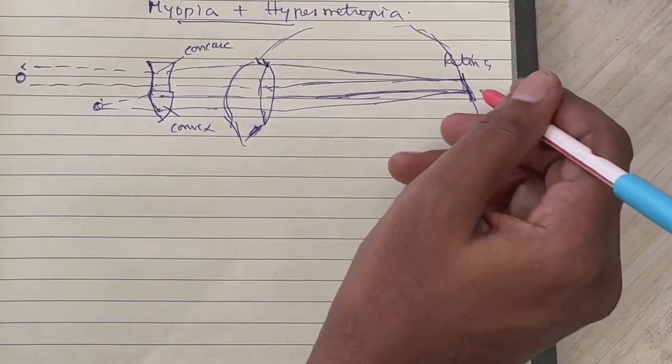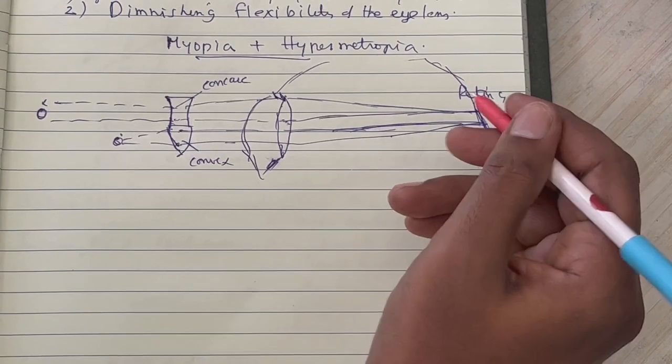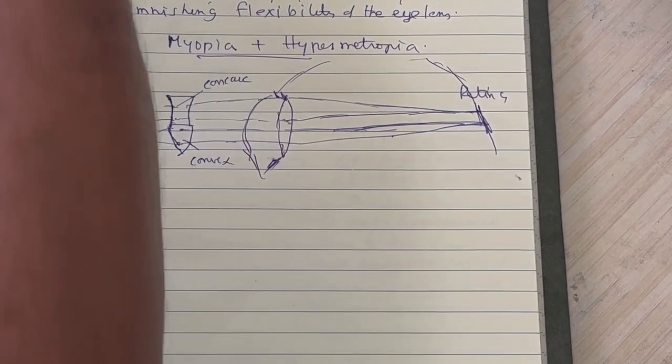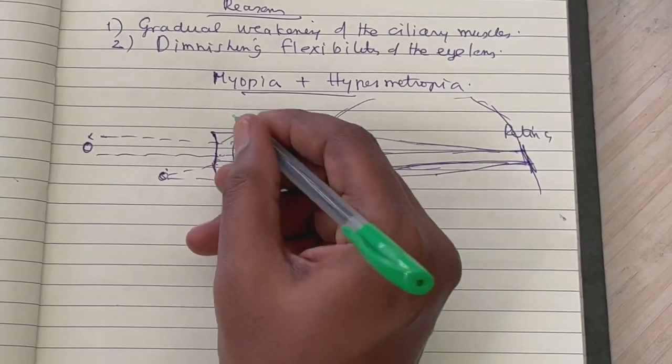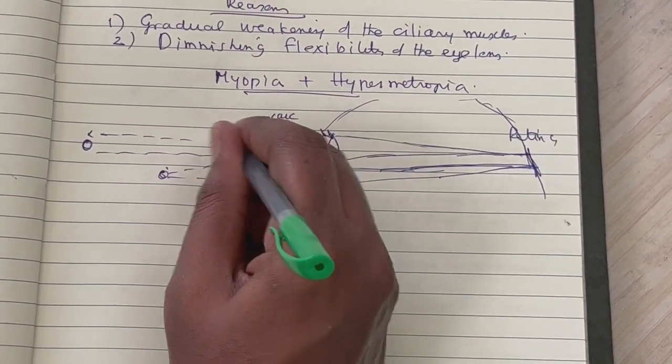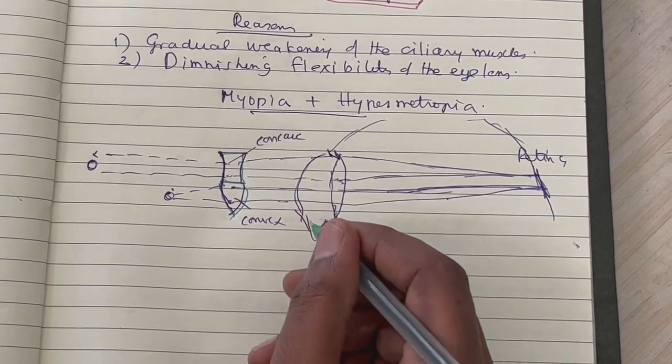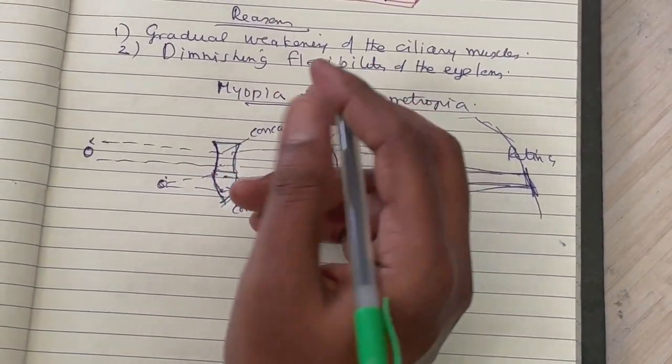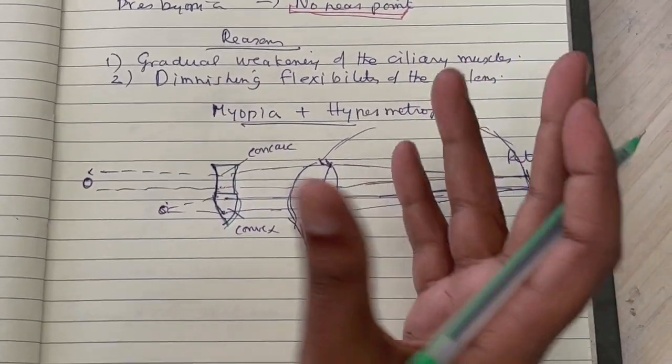And for a nearby object, something like this, you can see that here also focus is formed - an image is formed on the retina. So learn the point that interestingly in a case like this, by combining both a concave as well as a convex lens, both the problems - not seeing distant objects and not seeing nearby objects - can be solved.